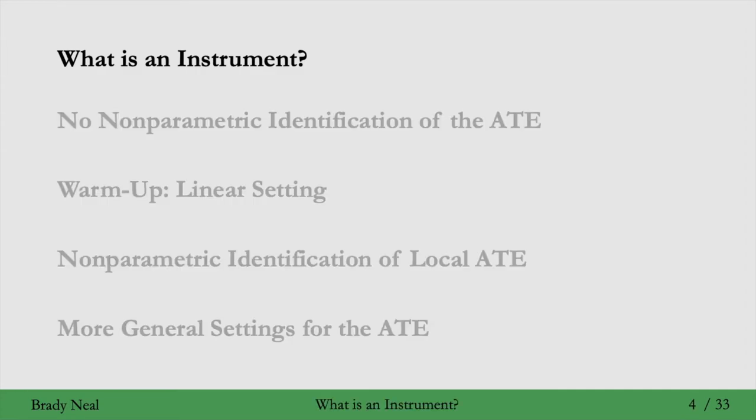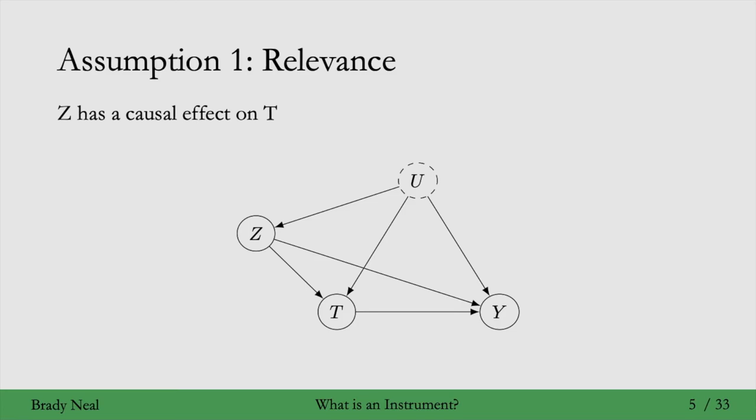There are a few different assumptions that an instrumental variable or an instrument must satisfy in order to qualify as an instrument. The first is that Z has a causal effect on T that corresponds to this edge circled in blue here. And this assumption is sometimes referred to as relevance. The instrument is relevant to the treatment here in that it's a cause of the treatment.